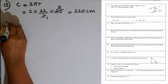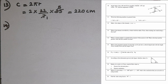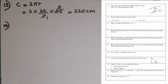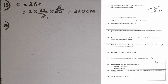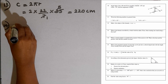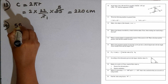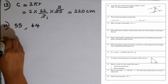Question number 14: when a certain number is rounded off to the nearest ten, the answer is 60. What is the least and the greatest value this number can take? The least value is 55 and the greatest value is 64.